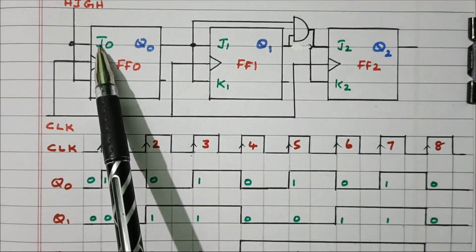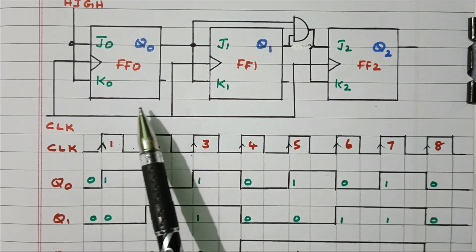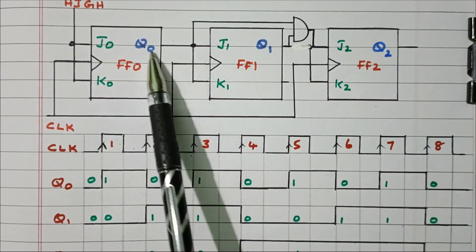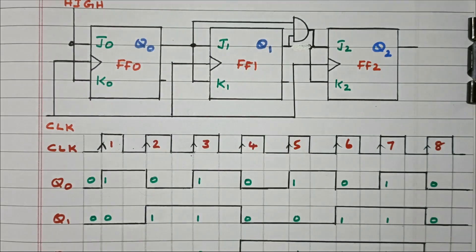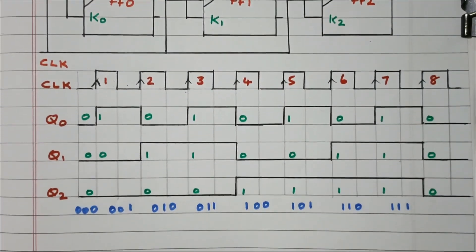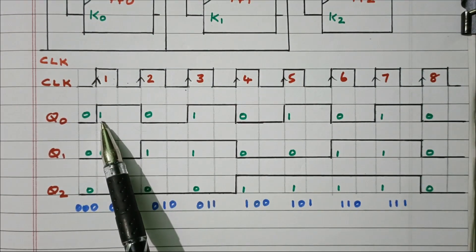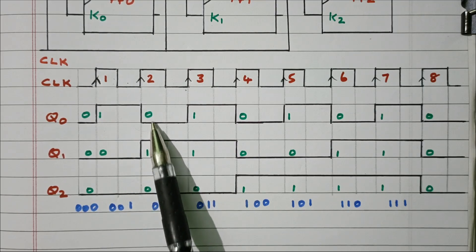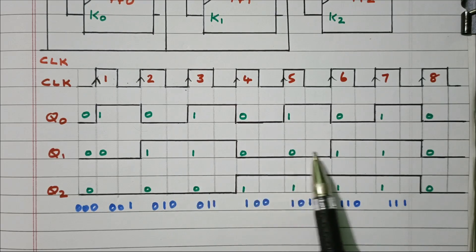Looking at the diagram: for the first flip-flop, always one is connected so every clock pulse Q0 changes. But for J1 and K1 connected as Q0, whenever Q0 is one then only the output toggles. If Q0 is zero, no change. So based on that the clock diagram is produced — whenever Q0 is one, J1 and K1 are one, causing a toggle, and whenever Q0 is zero there is no change.